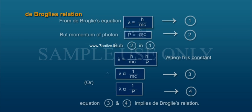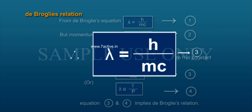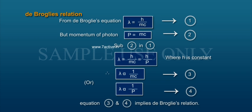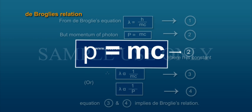From de Broglie's equation, lambda is equal to h by mc, Equation 1. But momentum of photon P is equal to mc, Equation 2.